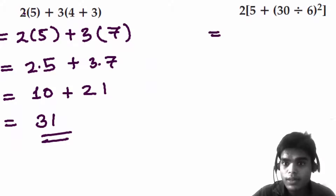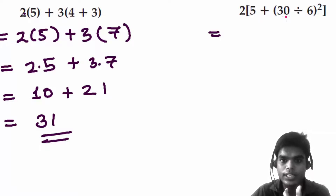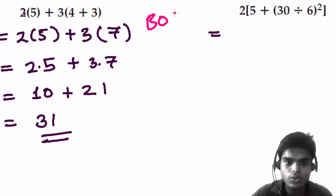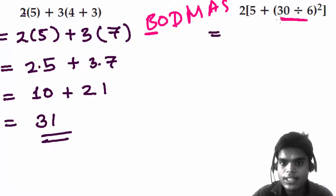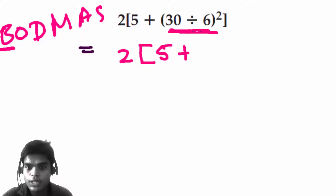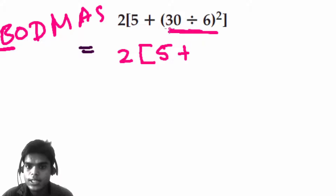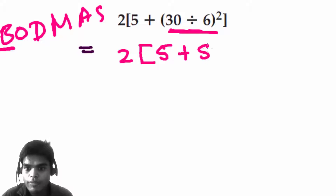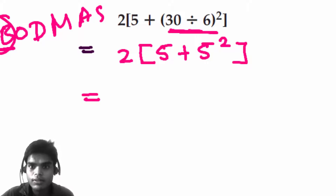Now the second one. In BODMAS, B stands for brackets, so we always finish the innermost brackets first. We have two in the big brackets, then five plus — now I'll solve this inner part. The whole thing is squared. Three divided by six: six times five is 30, so this is five. That part is squared, bracket close.